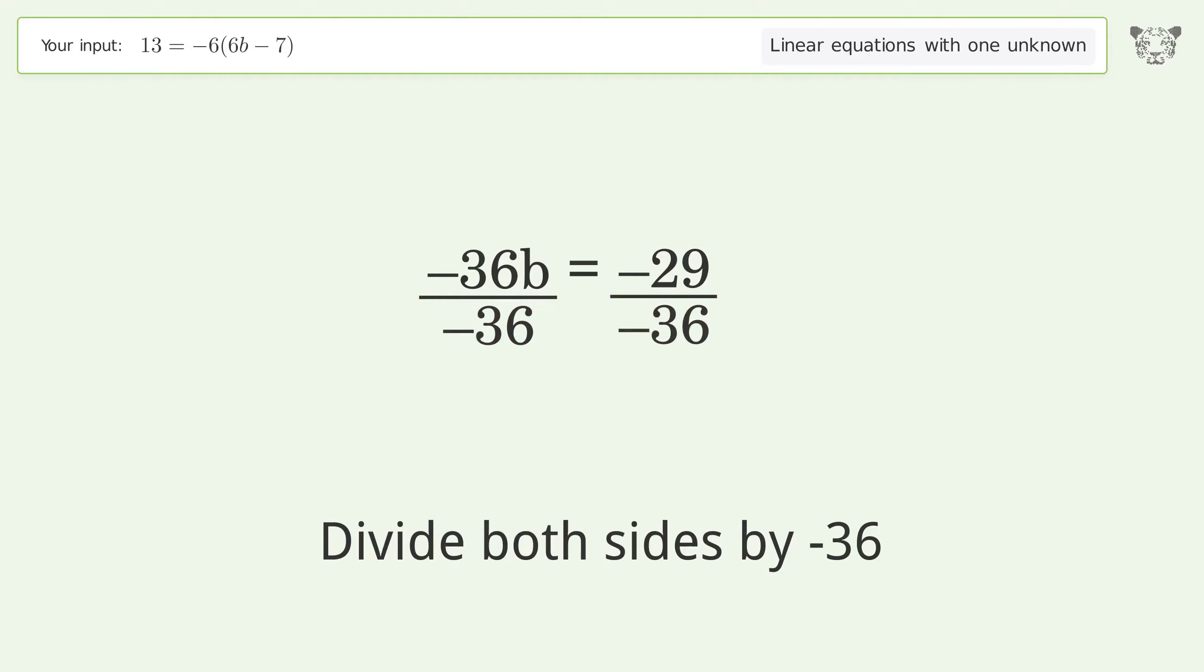Isolate the b. Divide both sides by negative 36. Cancel out the negatives.